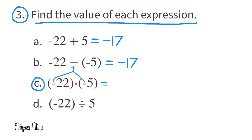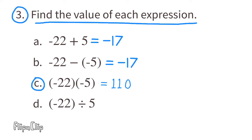Part c: negative 22 times negative 5. This is a negative times a negative, so the answer is going to be positive. 22 times 5: think of it as 20 times 5 which is 100, plus 2 times 5 which is 10. 100 plus 10 is 110. So negative 22 times negative 5 equals positive 110.